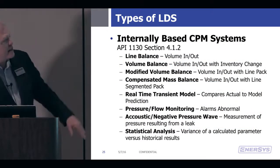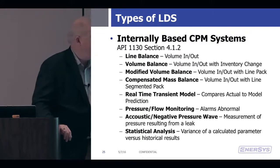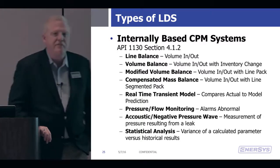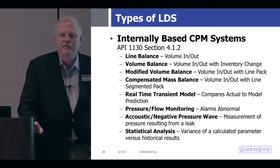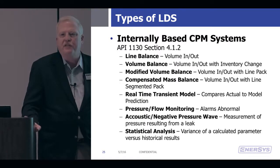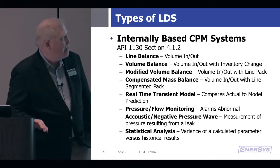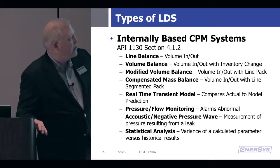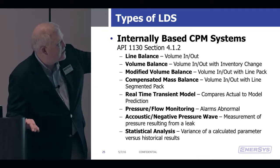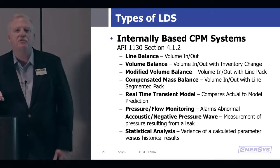These are the various kinds of volume detection. Compensated mass balance is like mass balance, but also takes into consideration line pack. Line pack in a liquid system might include slack line, particularly if you've got a pump up and down hills — slack line meaning zero fluid in the line. There's also pressure and flow monitoring, acoustic and negative pressure wave, and statistical analysis. These more advanced pressure, flow, and acoustic negative pressure wave methods require field automation and advanced sensors on the pipeline.